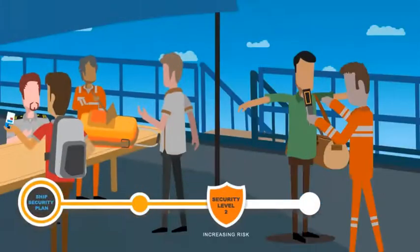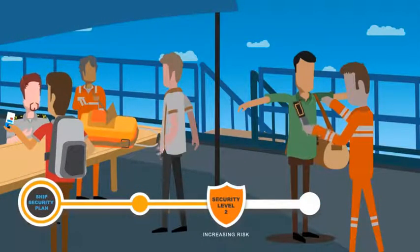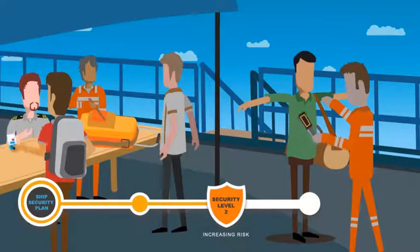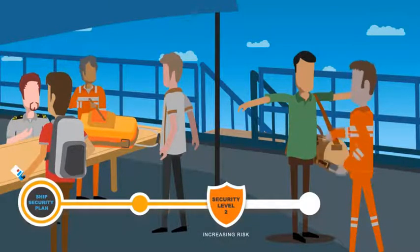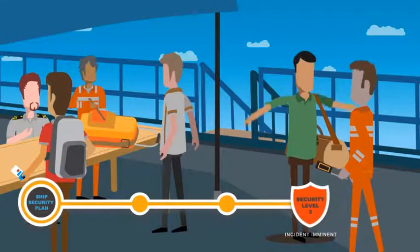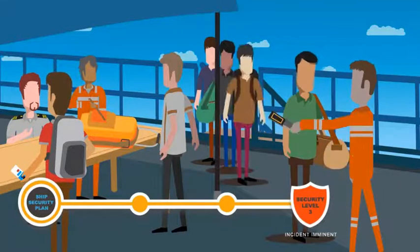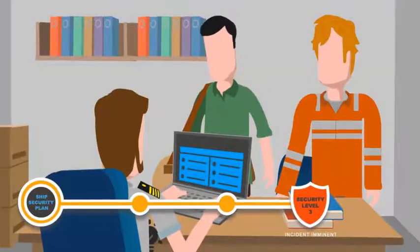You should follow the same procedure at security level 2, but with an increased inspection frequency on embarking persons. And at security level 3, you should inspect all embarking persons and escort all persons except crew when on board.